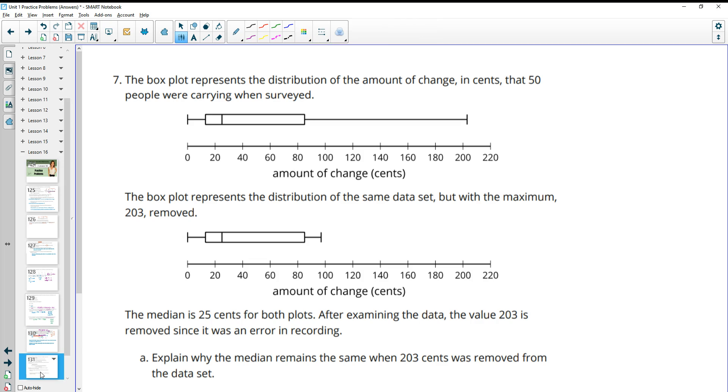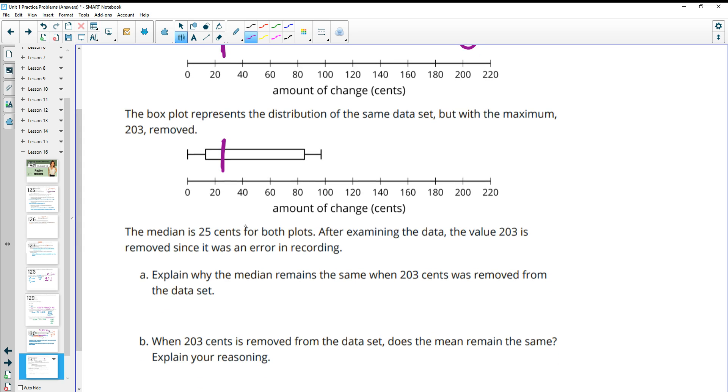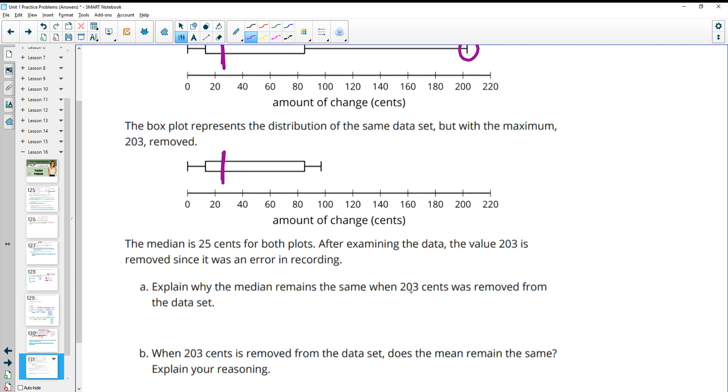Number seven, the box plot represents the distribution of the amount of change in cents that 50 people were carrying when surveyed. The second box plot represents where they take out the outlier of 203. So we can see this one is significantly higher, well over one and a half times outside the interquartile range. So if we delete this data point, then it looks like this. Since the median is 25 cents for both plots, after examining the data, the value 203 is removed since it was an error in recording. Explain why the median remains the same when 203 cents was removed.